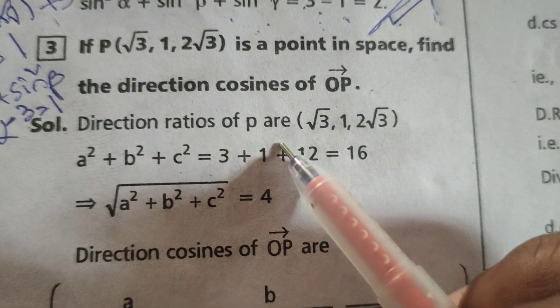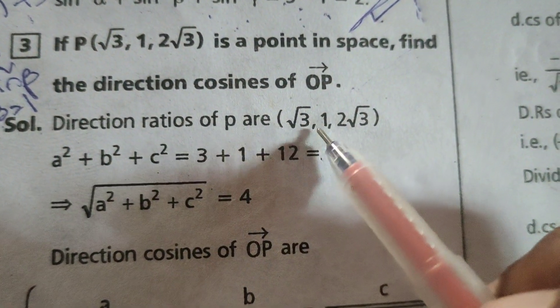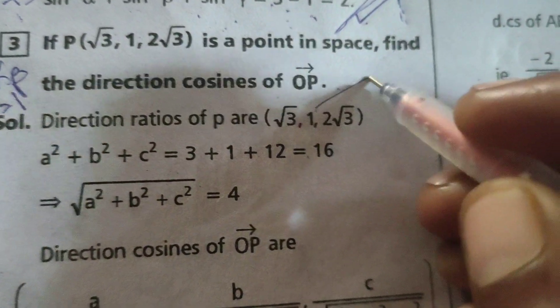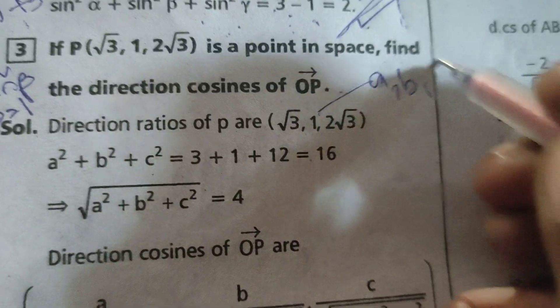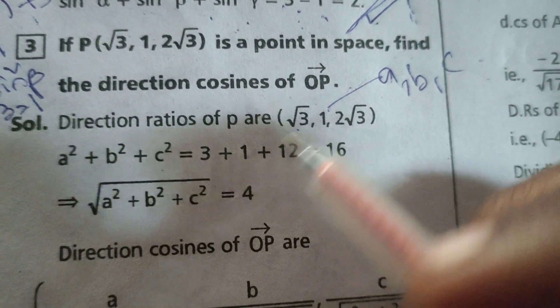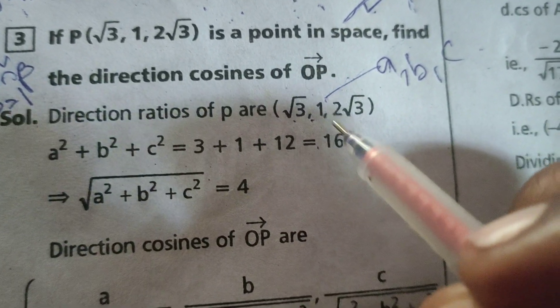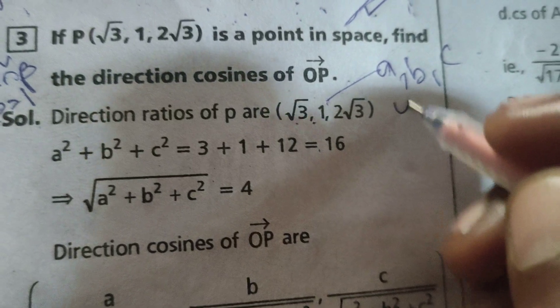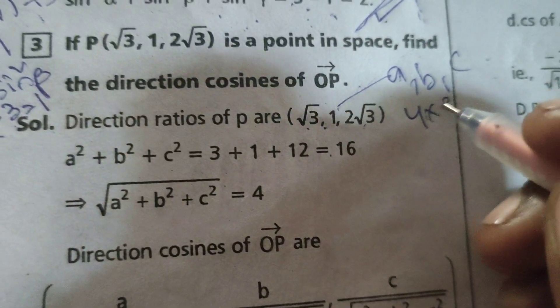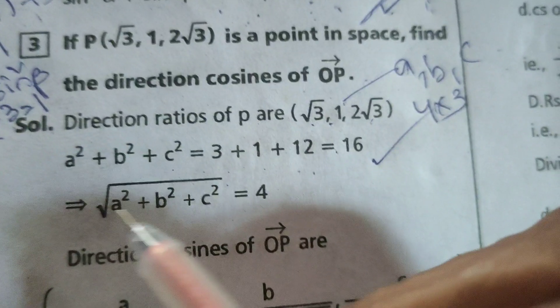Direction ratios of P are given. Suppose this is A, B, C. Then A² + B² + C² equals (√3)² = 3 plus 1² = 1 plus (2√3)² = 4 × 3 = 12. So 3 + 1 + 12 = 16.